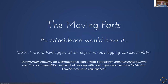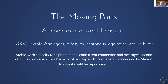As coincidence would have it, back in 2007 I wrote a product called Analogger, an asynchronous logger. The basic implementation had a client library that would send logging messages to a central server — one-way communication, firing logs out and assuming they arrived. The key thing with Analogger is that it's very stable and very fast. Even in 2007 Ruby, it was fast and could handle a phenomenal amount of concurrent connections and messages per second. The core of what I wrote all those years ago is pretty similar to what we were trying to do with Minion, so I thought maybe it could be repurposed.